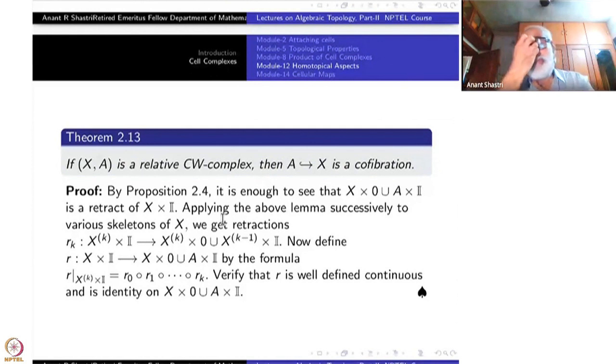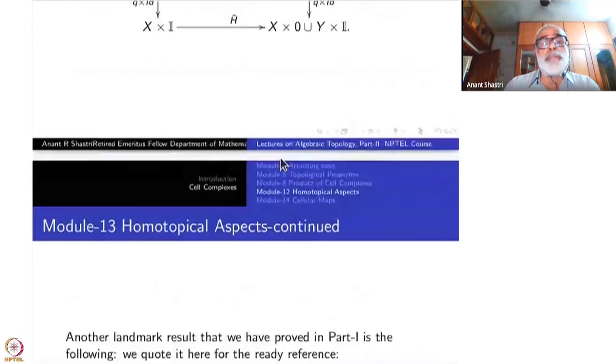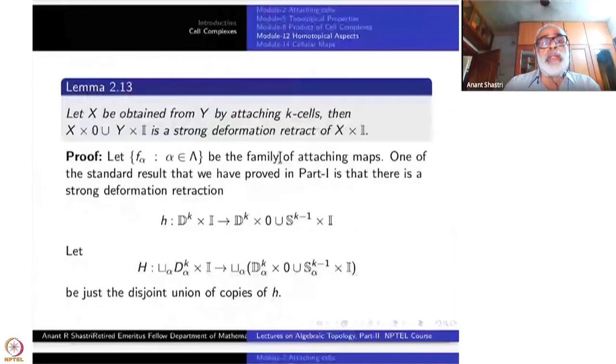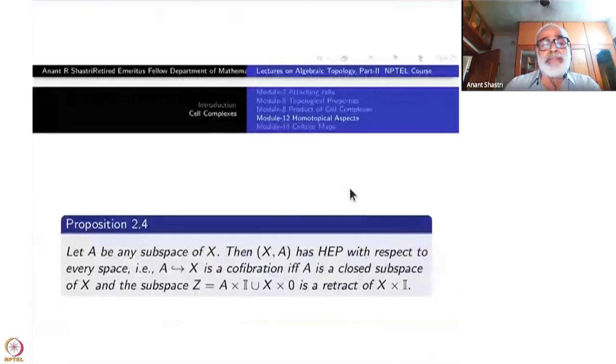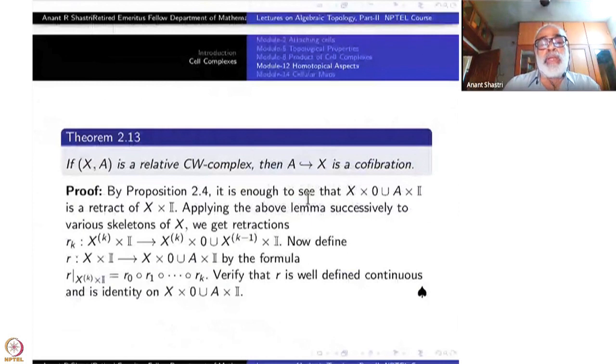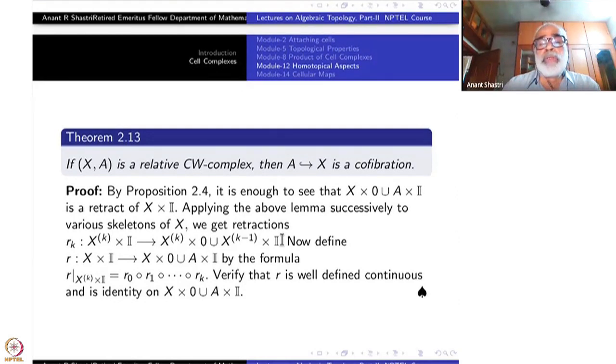This is done very easily using the inductive step from the previous lemma. If X is obtained from Y by attaching k-cells, then X×0 ∪ Y×I is a strong deformation retract of X×I. You don't need strong deformation retract - just retract is good enough. It's enough to show that X×0 ∪ A×I is a retract. Applying the lemma successively to the various skeletons, we get a map R_k from X_k×I to X_k×0 ∪ X_{k-1}×I, because X_k is obtained from X_{k-1} by attaching k-cells.